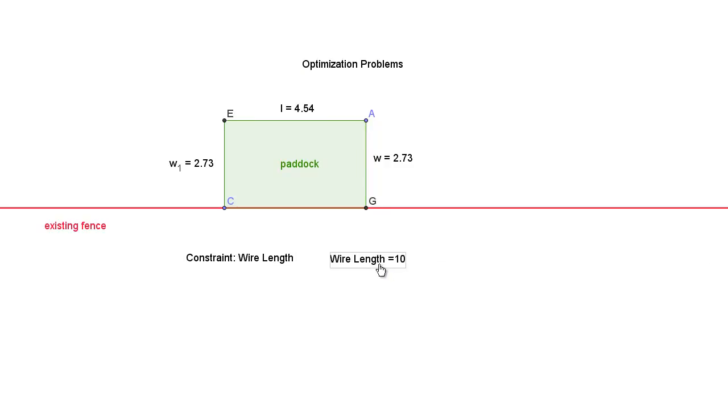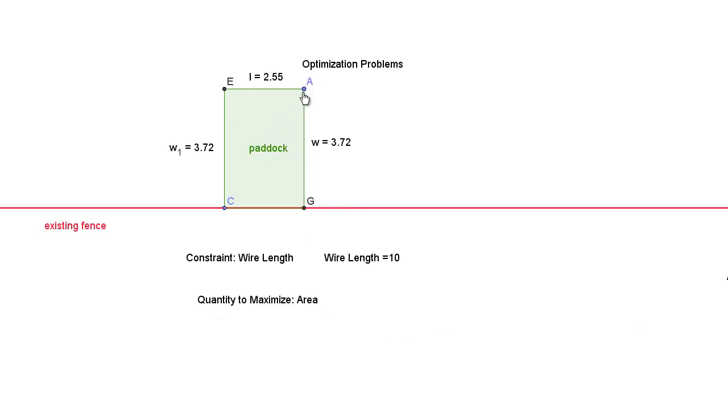So in this problem we're going to assume I have a wire length of 10 meters and I'm trying to make the biggest area of paddock that I possibly can. I've got this quantity that I want to maximize and that is the area. I also have this constraint which is the length of the wire.